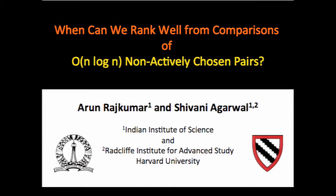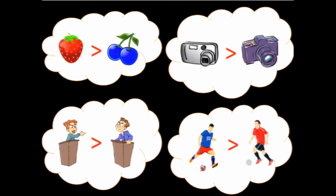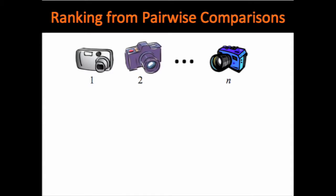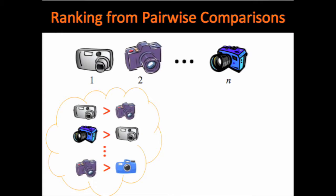As human beings, we love to make pairwise comparison judgments. We say all the time that we like this food more than this one, we thought this candidate did better than this one in the debate, and so on and so forth. A natural question that arises is, if we have some N items and we observe a bunch of pairwise comparisons among these, can we learn from these comparisons a good ranking or permutation of the N items?